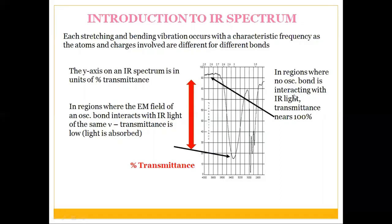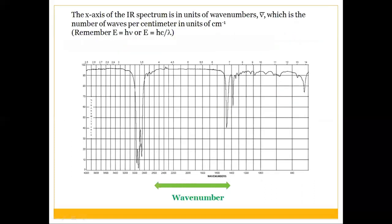In regions where no oscillating bond interacts with IR light, transmittance nears 100% and no peak is observed. The x-axis of the IR spectrum is in units of wavenumbers, in per centimeter (cm⁻¹). The normal range of the IR spectrum runs from 600 to 4000 cm⁻¹.